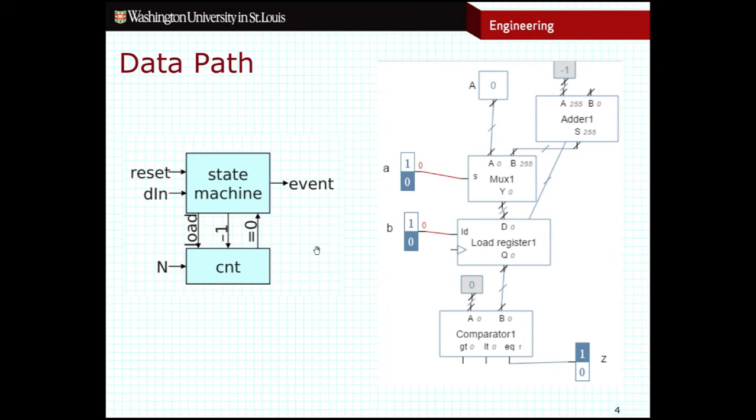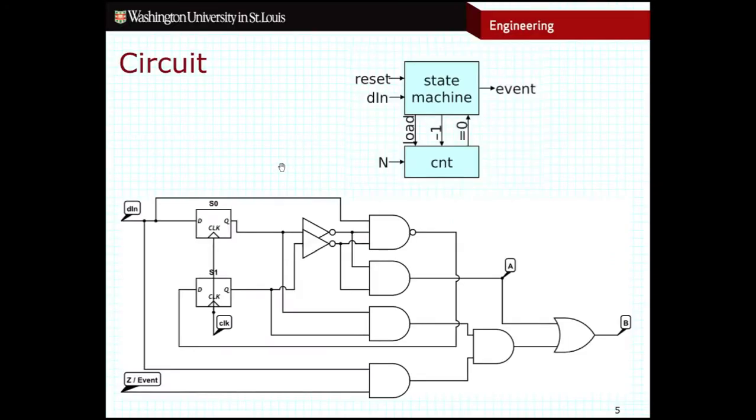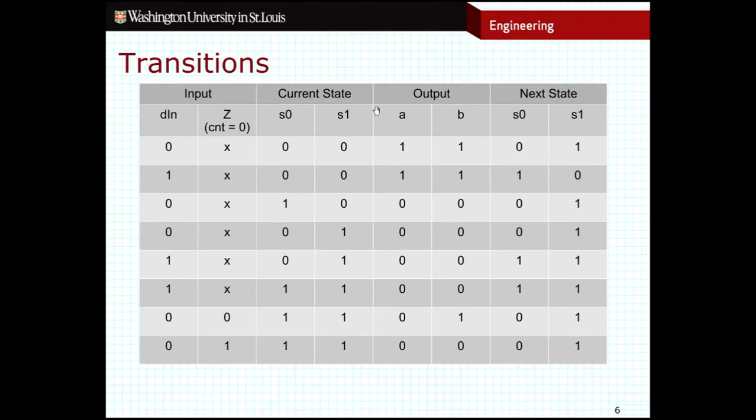And then in the last video, we saw how to construct the state machine. So here is the circuit that we constructed in the previous video. We see it takes in inputs D in. It also takes in an input from our data path that we see here, represented as Z. And the outputs of this state machine are not only the high-level state machine outputs, but also outputs that control the data path.